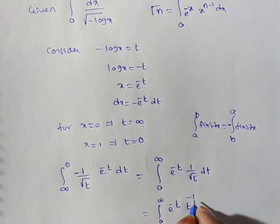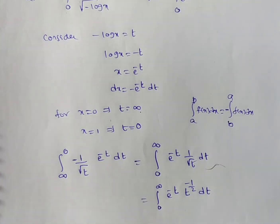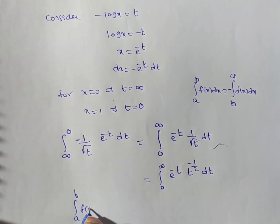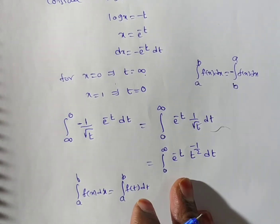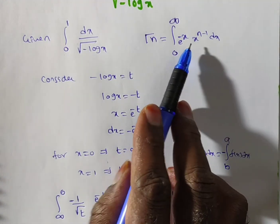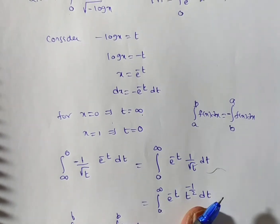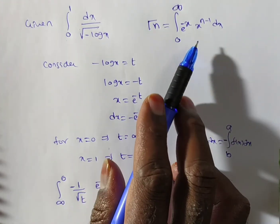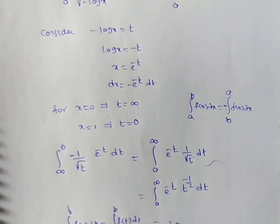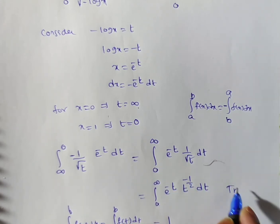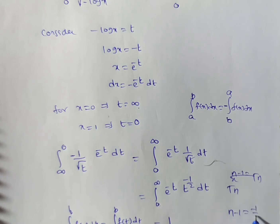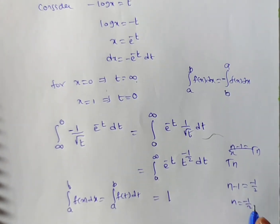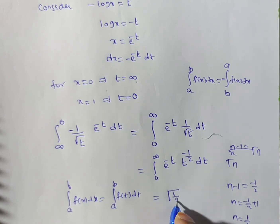From the definite integral property, integral from a to b of f(x)dx equals integral from a to b of f(t)dt, so both are equal. Now observe: the gamma function is defined as integral from 0 to infinite of e to the power of minus x times x to the power of n minus 1. Here we have e to the power of minus t times t to the power of minus 1/2. So in place of n minus 1 we have minus 1/2, which means n minus 1 equals minus 1/2, so n equals minus 1/2 plus 1, giving n equals 1/2. Therefore this integral equals gamma of 1/2.